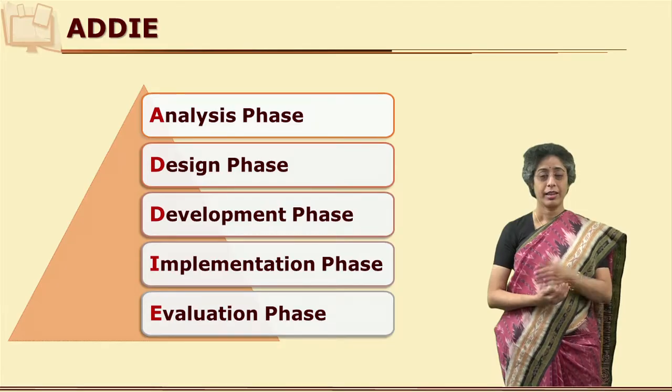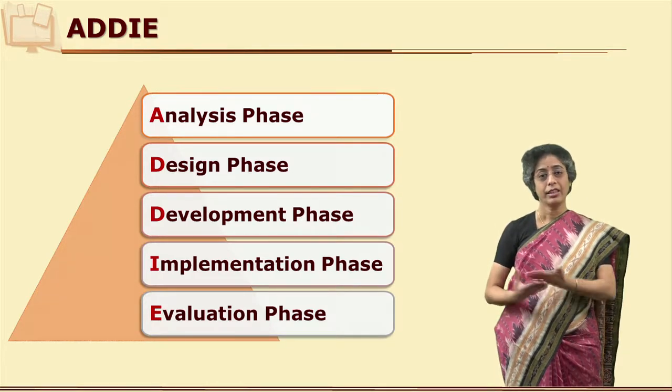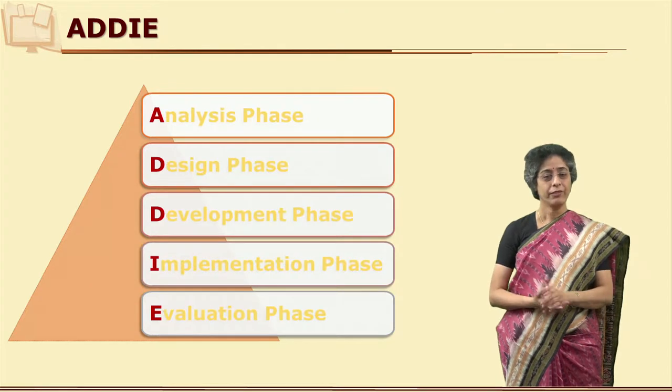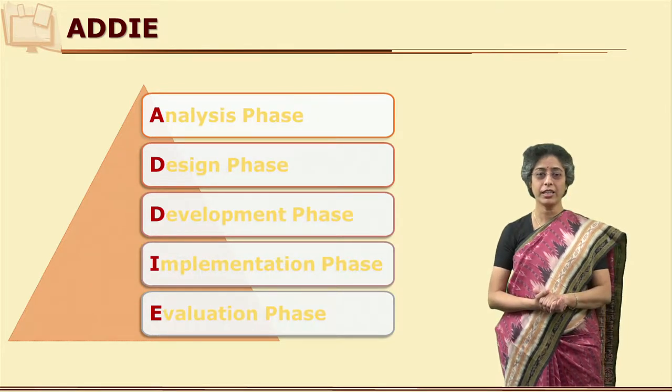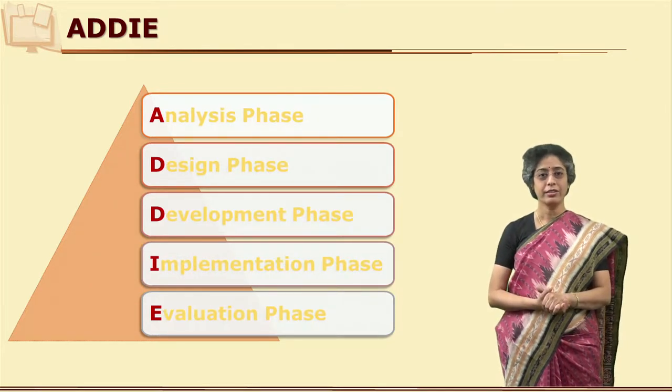When we say that it requires proper instructional design, we need to understand the stages and phases of instructional design development. In any instructional design development, there are some common phases: Analysis, Design, Development, Evaluation, and Implementation. We generally use the abbreviation ADDIE for these stages.